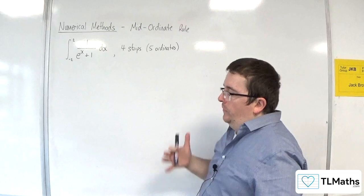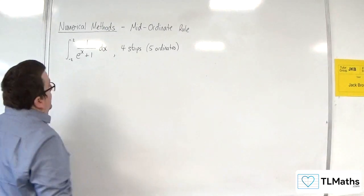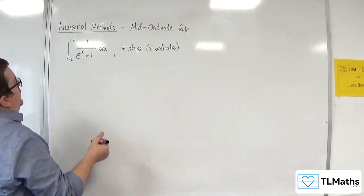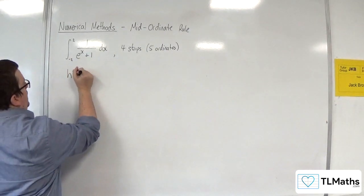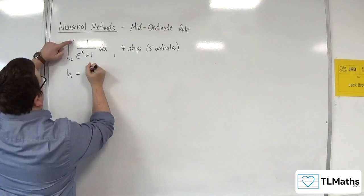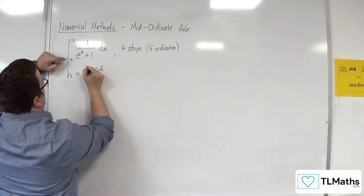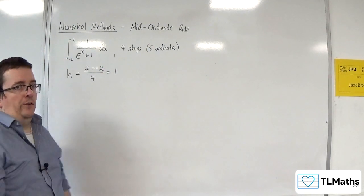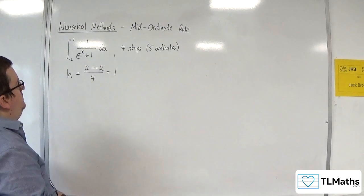So what I want to do is work out, firstly, the width of each strip. So h is the width of the strip, which will be 2 take away minus 2, divided by the number of strips. So each strip is of length 1.